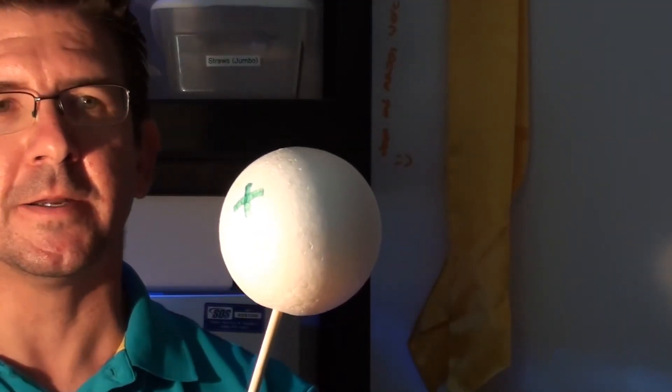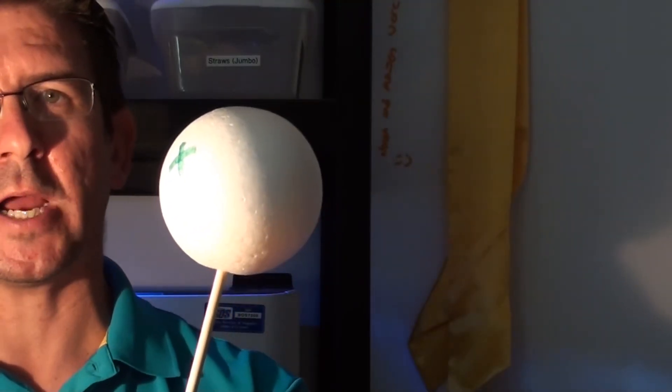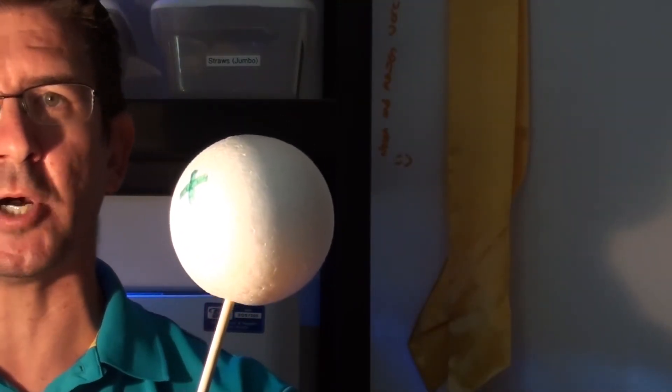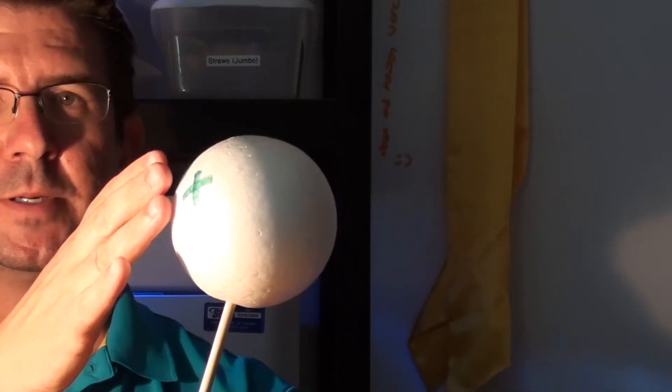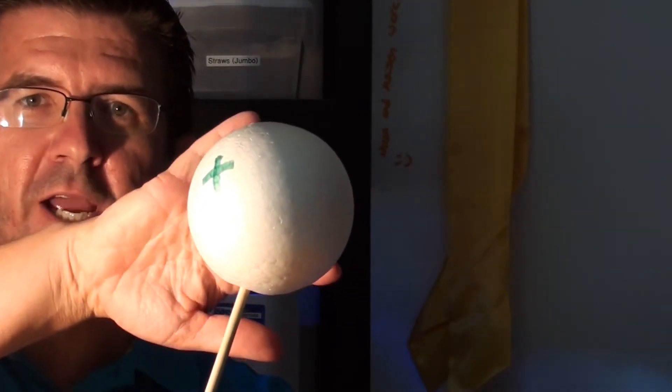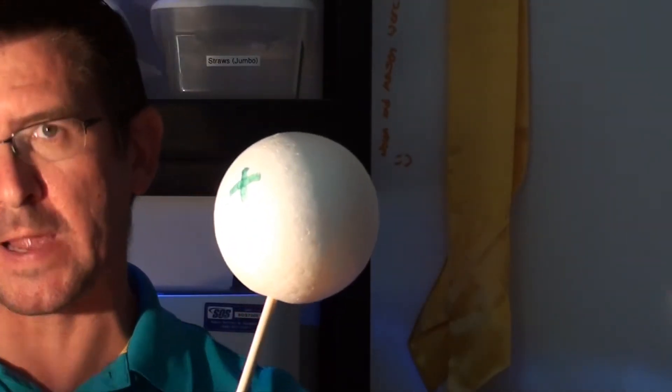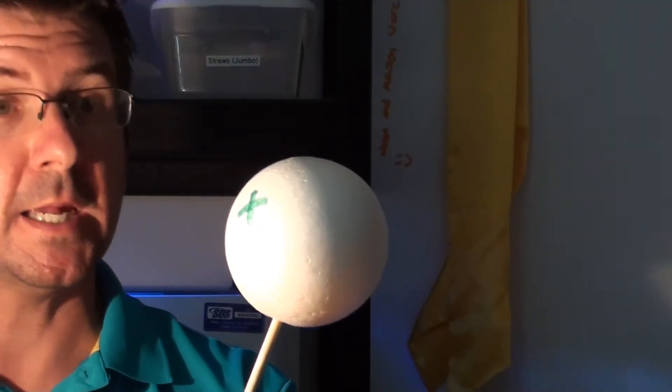And you can see that no matter how I hold this, no matter how I rotate it, about half of the ball is always lit up by the light bulb. And about half the ball is always shadowed because the light from the sun, or the light bulb as the case may be, isn't hitting it.